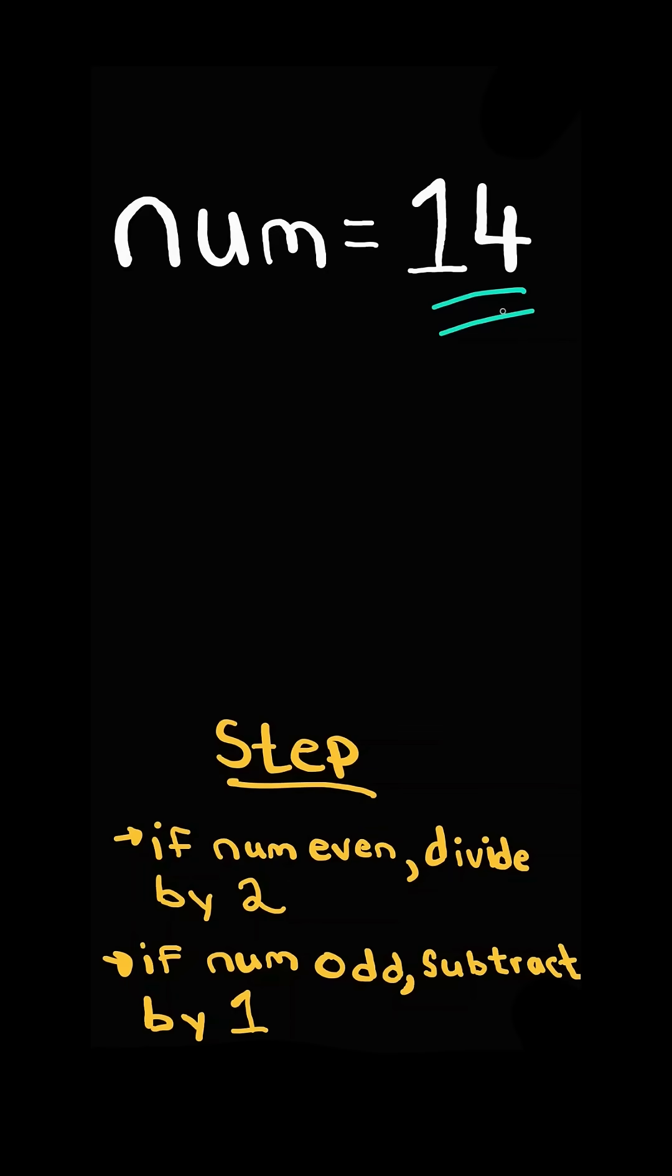In this case, the number is even, so we divide it by two. Now the number is odd, so we subtract one. It's even, so we divide by two. It's odd, so we subtract one.